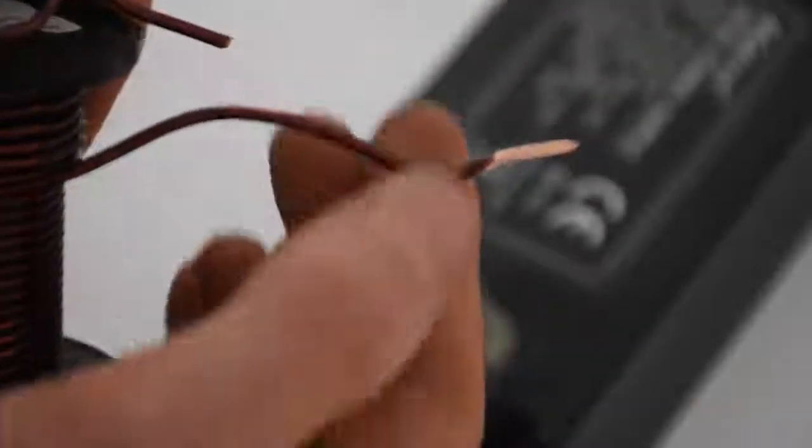Before attaching the other nail to the copper wire I sanded off some of the enamel coating on the end so that it will conduct properly.